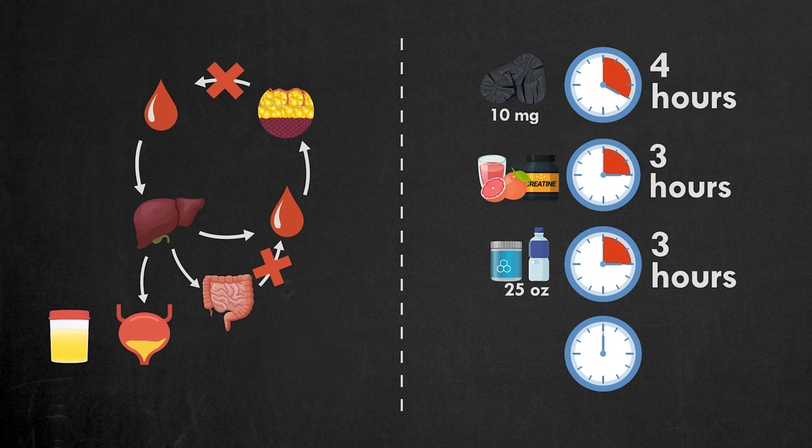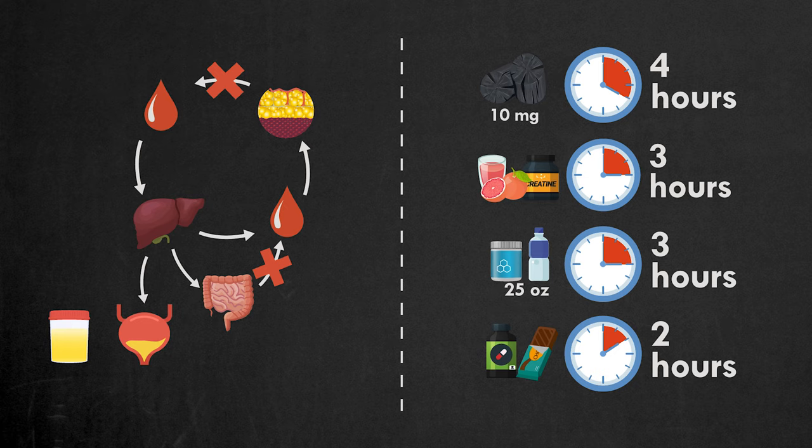Two hours before the test, take vitamin B and eat a chocolate bar or any other type of sweets. Vitamin B will restore the urine color, while the chocolate bar will stop the breakdown of body fat and the excretion of THC into the blood.